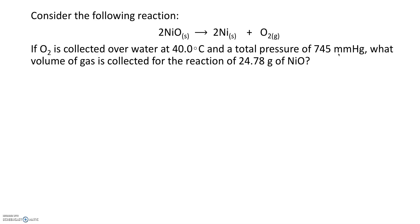We want to figure out the volume of a gas. We also notice that temperature is provided and a total pressure, so chances are you're going to have to use the ideal gas law equation PV = nRT — if you're given temperature and pressure and you want volume, that's the equation to use.